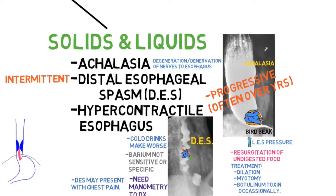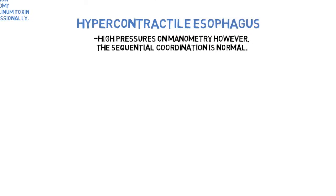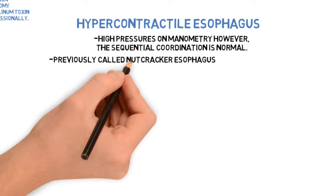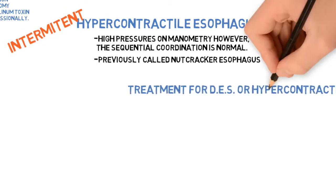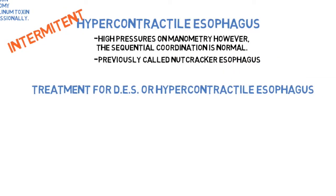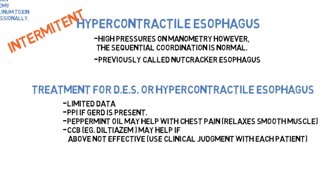Hypercontractile esophagus, also in this category, shows high pressures on manometry; however, the sequential coordination of contractions is normal. Previously called nutcracker esophagus, it is also intermittent. Treatment for DES or hypercontractile esophagus: PPIs if GERD is present, peppermint oil may help with chest pain by relaxing smooth muscle, and calcium channel blockers may help if the above are not effective. Use clinical judgment with each patient.